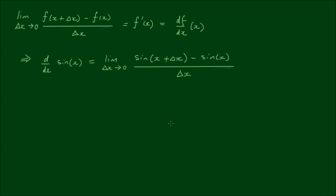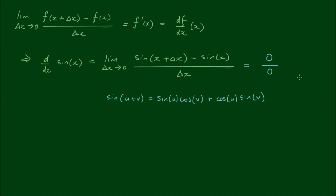We're going to manipulate this expression using trigonometric identities — specifically the sum-difference formula: sine(u + v) = sine(u)·cosine(v) + cosine(u)·sine(v). Now if we try to apply the limit directly, as Δx approaches zero, the numerator becomes sine(x) minus sine(x), which equals zero. The denominator also becomes zero, so we have zero divided by zero, which we can't determine mathematically. That's why we need to use this manipulation.